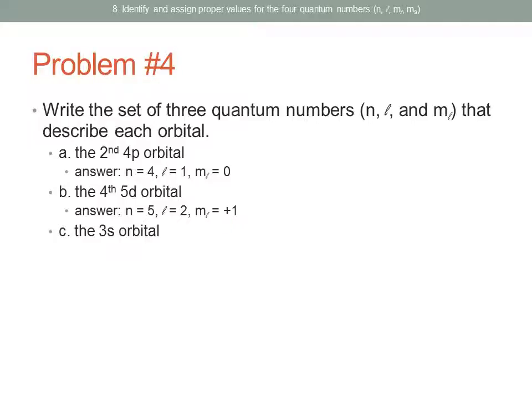For the 3S orbital, recall that S sublevels only have one orbital, so there is only one possibility. N equals 3 because we are in the third energy level. L equals 0 because it is an S sublevel — L is always 0 for an S sublevel. M_sub_L is also 0 because if L equals 0, M_sub_L can only be 0.